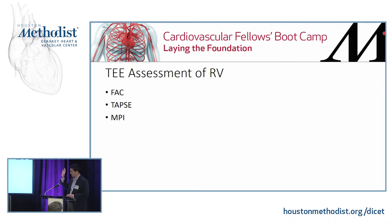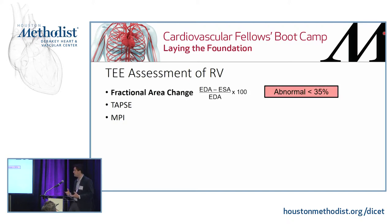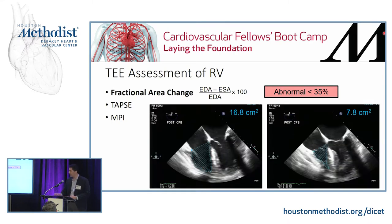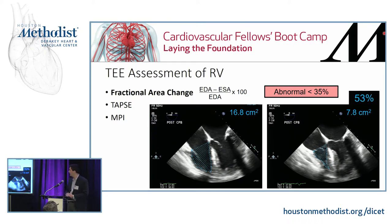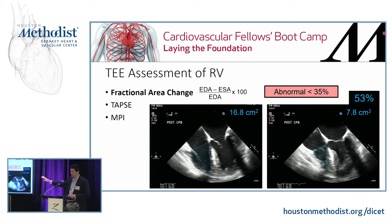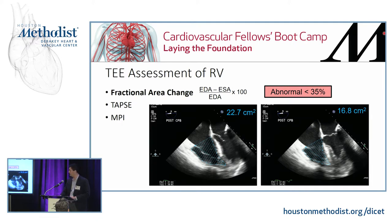Now for some quantitative ways to assess the RV — I chose three that are relatively simple and conceptually different. The first is fractional area change (FAC): simply measure the RV area in diastole, then in systole, and get the percentage change. Abnormal is less than 35%. This example shows a normal FAC of 53% — the same patient with acute RCA ischemia — after bypass when things were going well. Then moments later after the RCA graft kinked, the FAC dropped from 53 to 26.